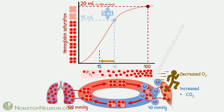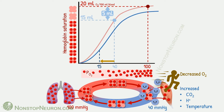Second, exercising muscles release more carbon dioxide. Increased carbon dioxide increases hydrogen ion concentration. Release of other acids also contributes to increasing hydrogen ion concentration. Temperature of exercising tissue is also increased. As we have seen in the video on factors shifting this curve, all these factors shift the curve to the right. So, the set point at exercising tissue moves here, corresponding to even lower oxygen saturation, meaning more oxygen is released at exercising tissues.